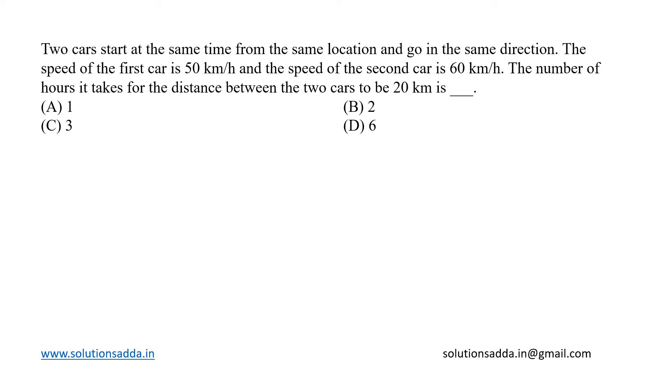This is a general aptitude question. Two cars start at the same time from the same location and go in the same direction. Let us assume those two cars to be C1 and C2, going in the same direction and starting at the same point. The speed of the first car is 50 kilometers per hour.